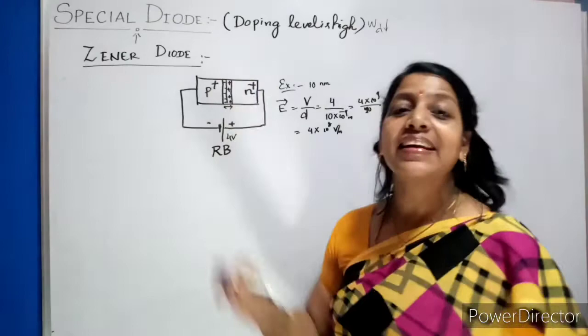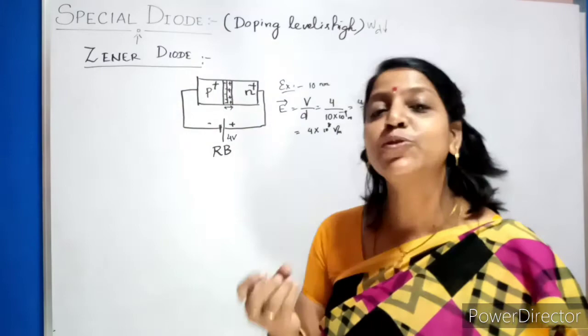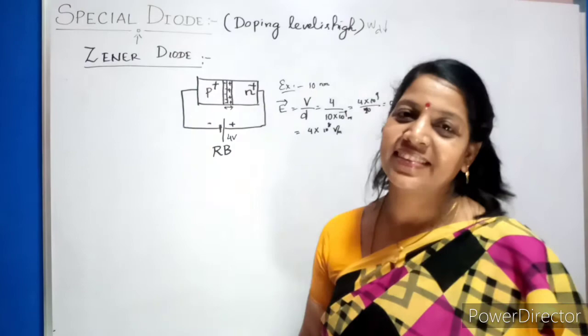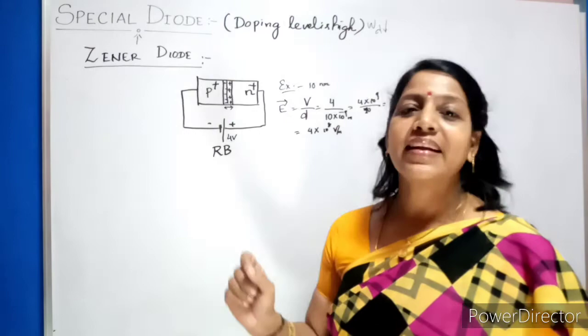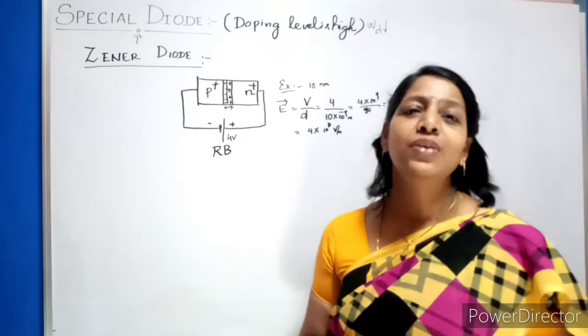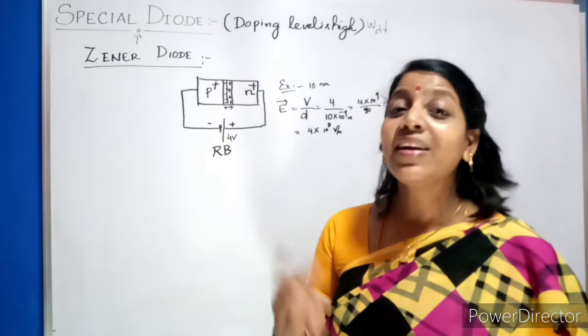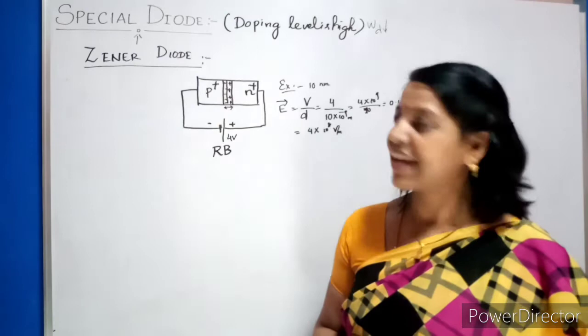Due to this increase in electric field across the junction, there will be breakage in the covalent bonds or rupture in covalent bonds, due to which a sharp current flows through it. That is called Zener breakdown. It is designed such that according to the rating mentioned in that Zener diode, when it reaches that particular voltage, very sharp current starts to flow. Even if you further increase the voltage, it will not increase the voltage, but current will start to increase.